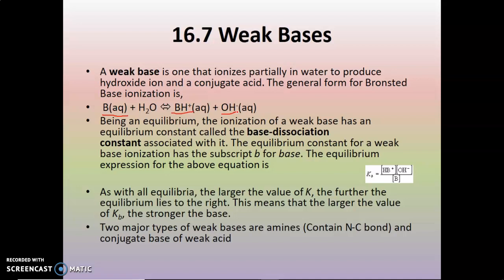Since this is in equilibrium, you have a base dissociation constant associated with it. The general formula for your base dissociation constant has the concentration of your conjugate acid times the concentration of hydroxide as the numerator, and the original concentration of your base as the denominator. Notice that water is not included because water is a liquid, so it's not included in your equilibrium concentration calculation.